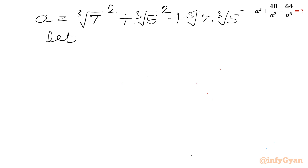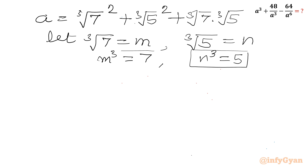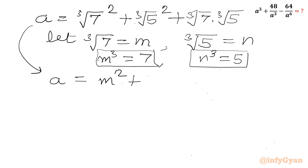Let us consider cube root of 7 equal to m and cube root of 5 equal to n, so m cubed equals 7 and n cubed equals 5. We will use these results a little later. So we can write a equal to m squared plus n squared plus mn. Let us call this equation number 1.